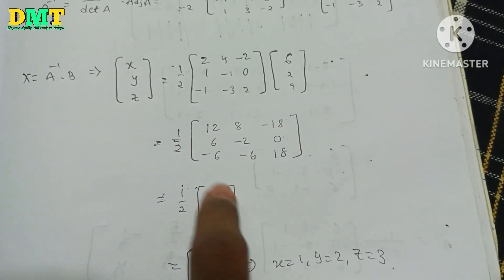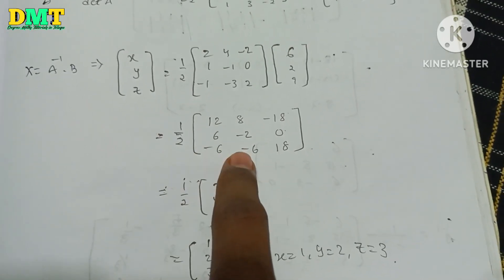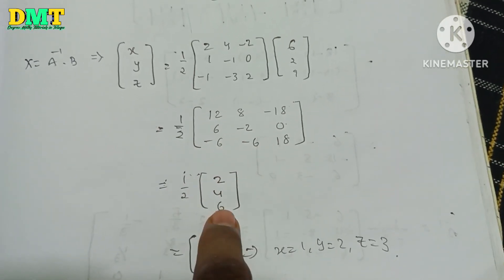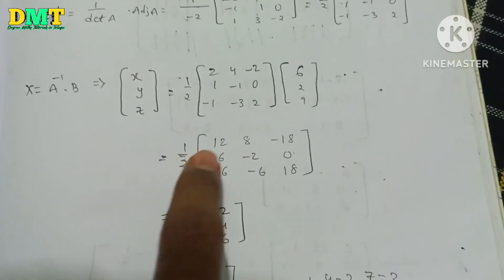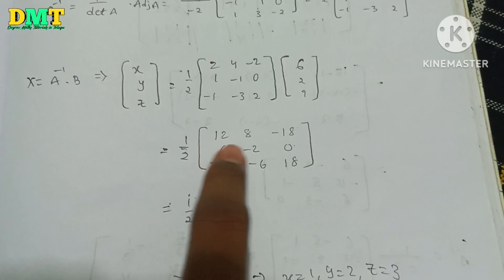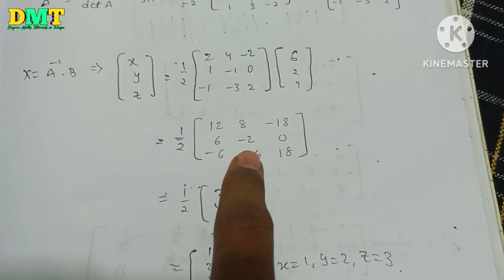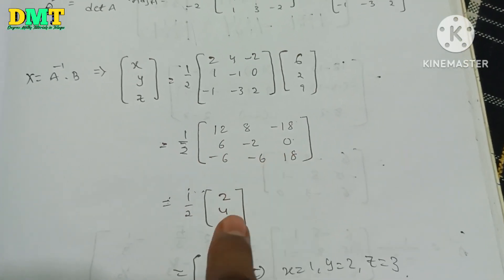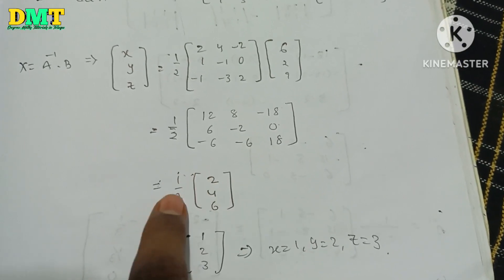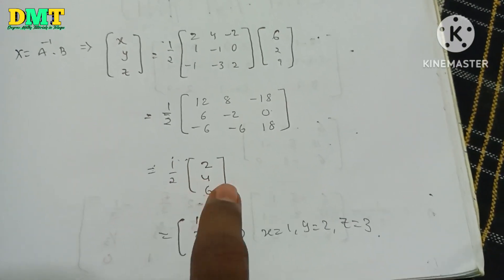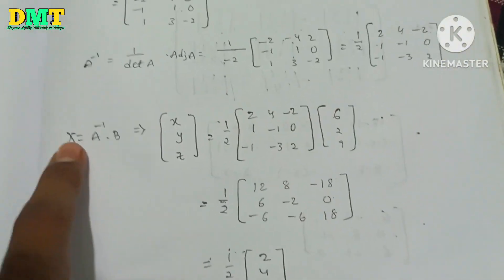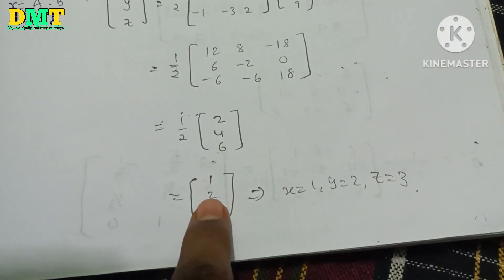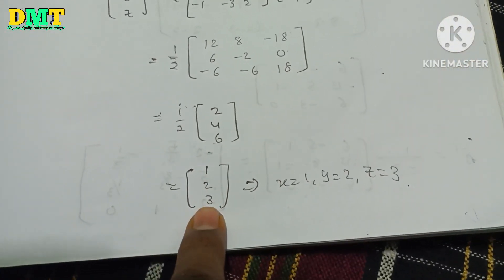So 1 by 2 into: 12 plus 8 is 20, minus 18 gives 2. 6 minus 2 is 4. Minus 6 minus 6 is minus 12, plus 18 is 6. Then 1 by 2 into multiply: 2 is 1, 4 is 2, 6 is 3. So x equals 1, y equals 2, z equals 3.